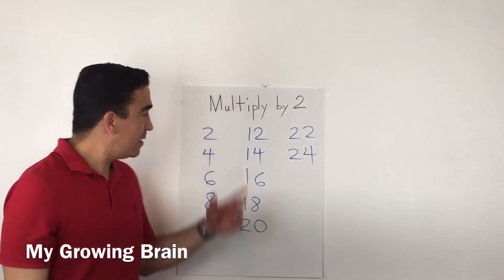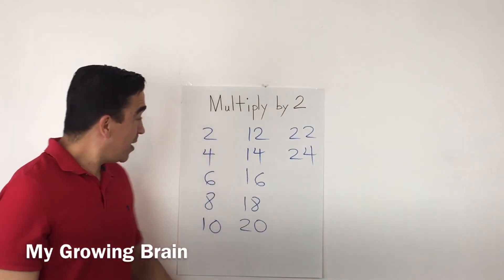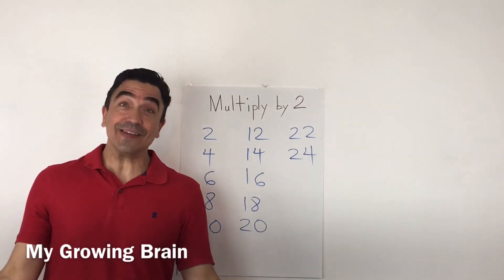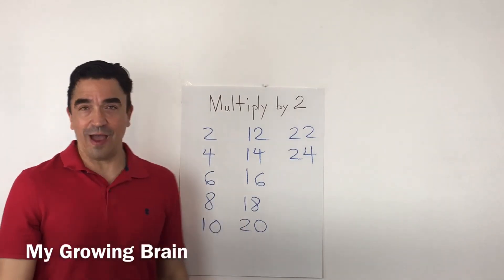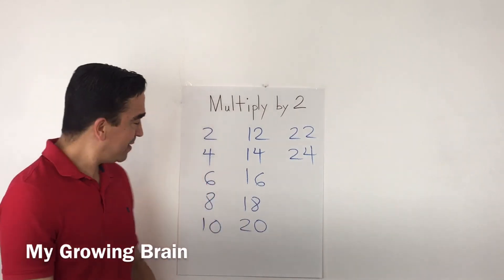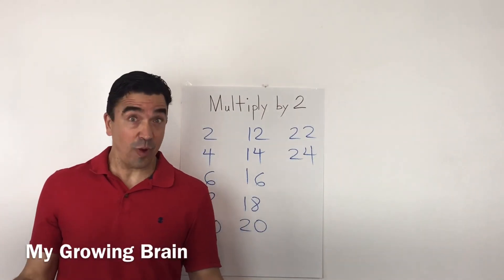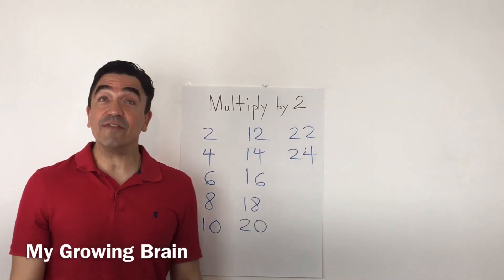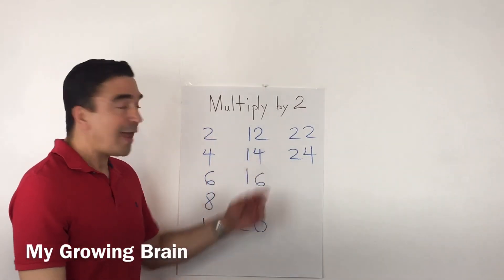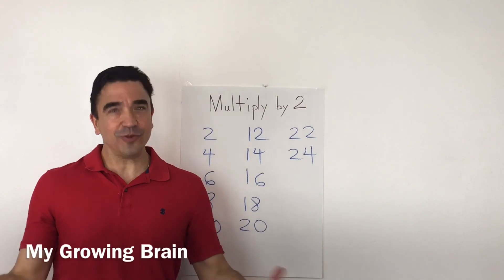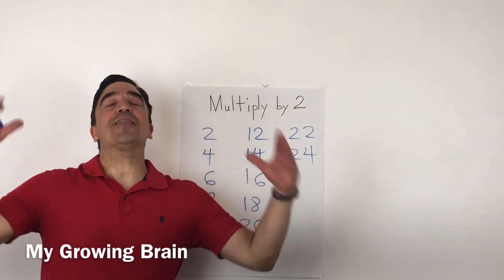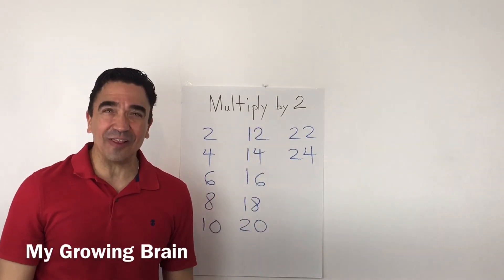2 times 7 is 14. 2 times 8 is 16. 2 times 9 is 18. 2 times 10 is 20. 2 times 11 is 22. And 2 times 12 is 24. And that concludes our lesson, and we'll see you in the next one.